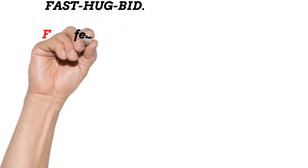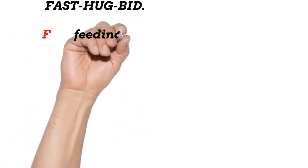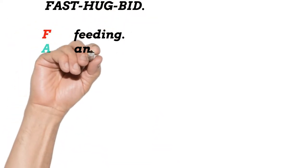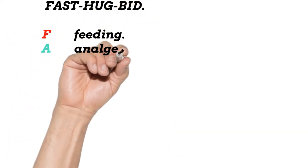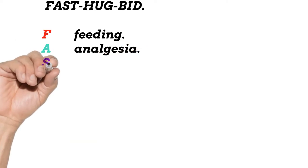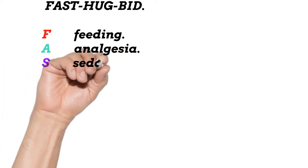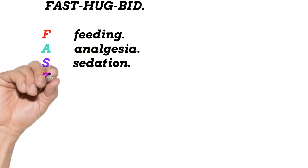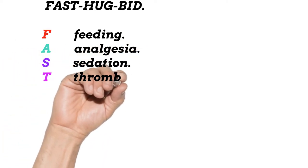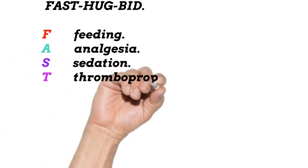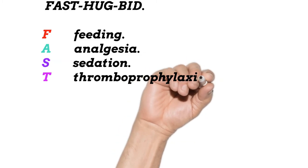FAST HUG BID mnemonic: F — Feeding. A — Analgesia. S — Sedation. T — Thromboprophylaxis.